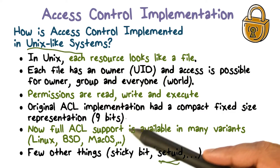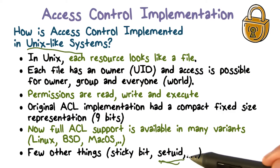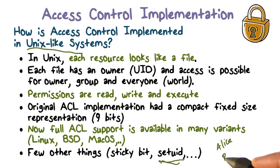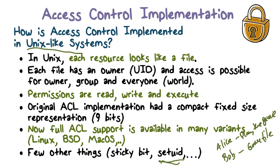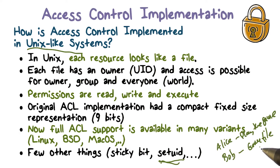This problem is solved by having something called a setUID bit. We have Alice and Bob — Bob owns the game file, and Alice wants to play the game. Bob is going to give Alice permission to execute the file. The score file is also owned by Bob, and Bob is not going to grant write access to Alice, because Alice should not be able to update that file unless she's playing the game. So Alice can read the score file — her score and others' scores — but she can't write it.